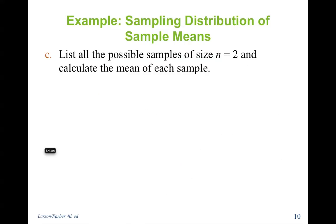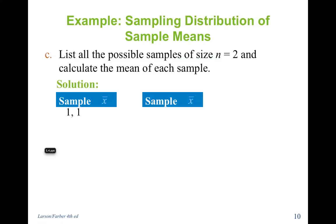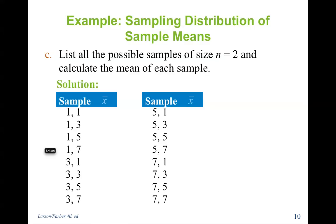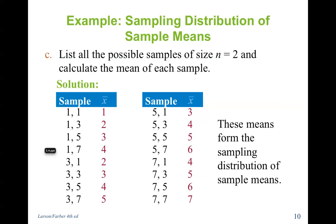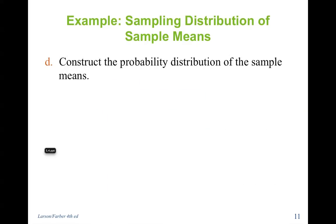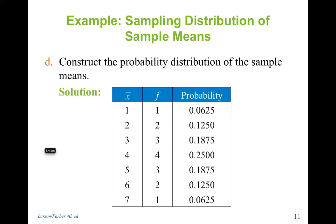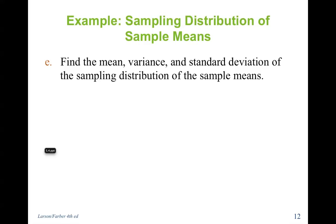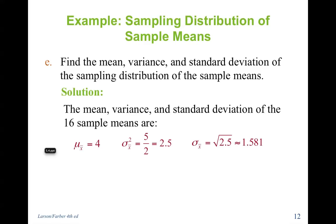List all the possible samples of size n equals 2 and calculate the mean of each sample. These means form the sampling distribution of the sample means. Now find the mean, variance, and standard deviation of the sampling distribution. The mean stays the same, the variance is divided by n, which in our case was 2, and you can take the square root to find the standard deviation or divide by the square root of n.